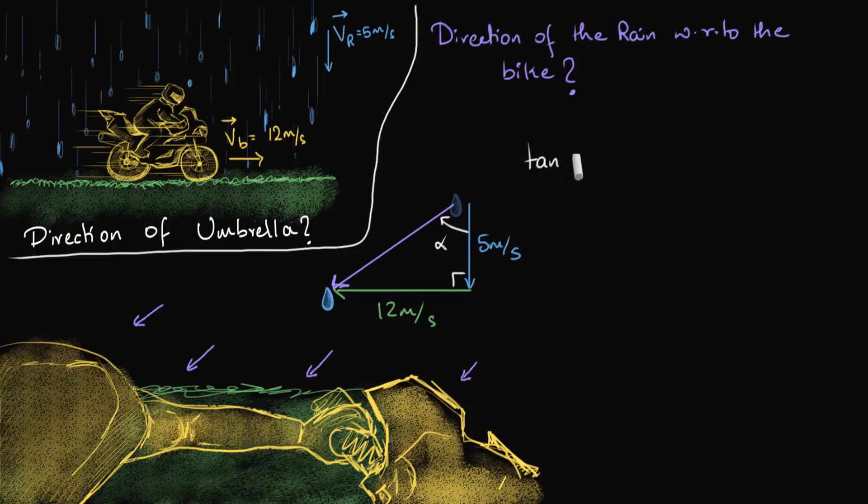So we can say tan alpha is equal to the opposite side, so that's 12 divided by the adjacent side, divided by 5. So that gives us 2.4. And so alpha will be equal to tan inverse of 2.4. And if you look up a trigonometry table, this angle turns out to be roughly 67.4 degrees.